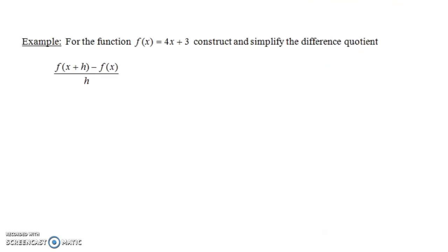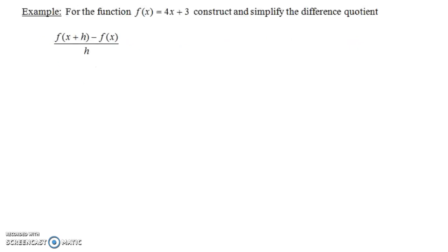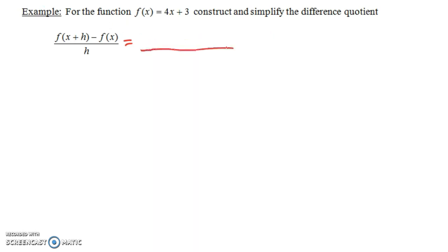Let's do an example. For the function f of x equals 4x plus 3, construct and simplify the difference quotient. This equals f of x plus h, minus f of x, all over h.